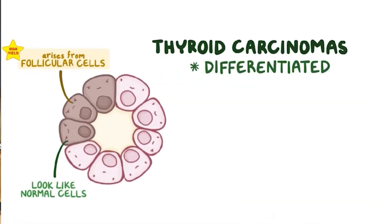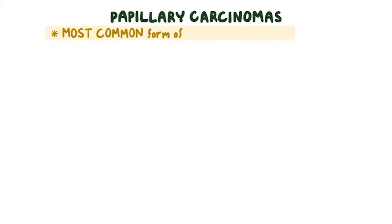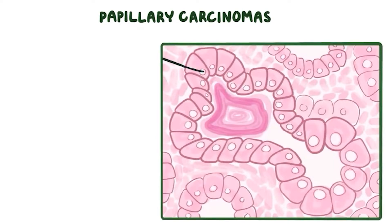There is a lot of difference between papillary thyroid carcinoma, follicular, and medullary. The most common is papillary thyroid carcinoma, then follicular thyroid carcinoma, then medullary thyroid carcinoma. One good thing about thyroid malignancy is that it is very slow growing, except for anaplastic and medullary types.